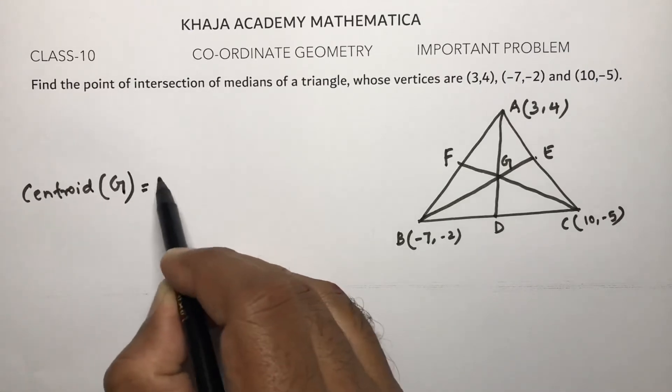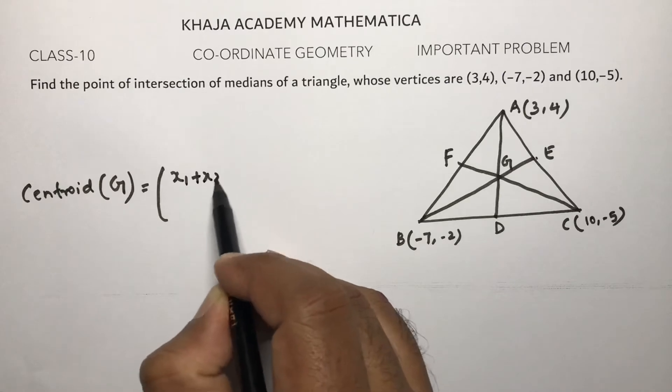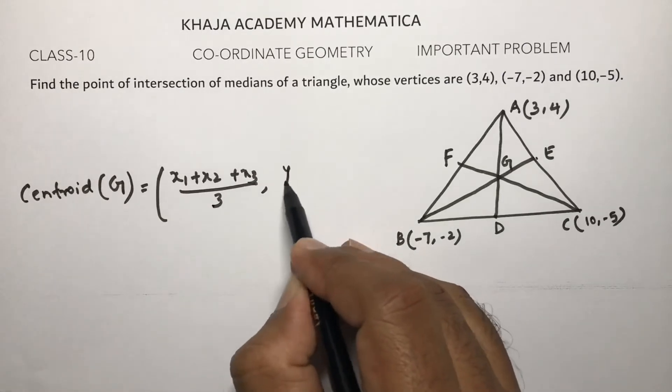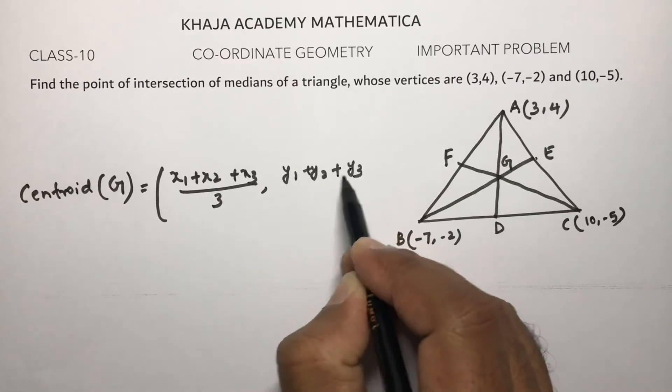The formula is (x₁+x₂+x₃)/3 and (y₁+y₂+y₃)/3, where (x₁,y₁), (x₂,y₂), (x₃,y₃) are the vertices.